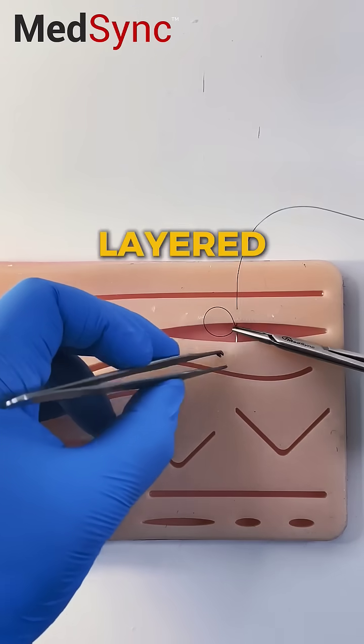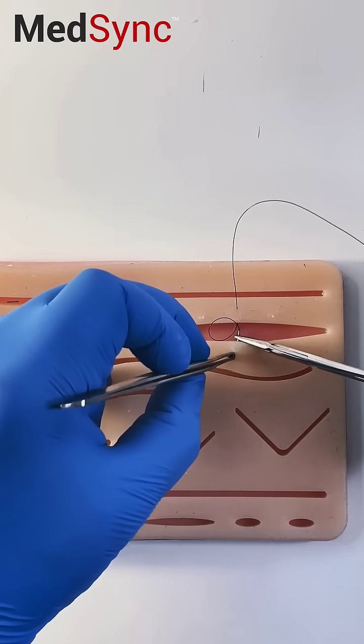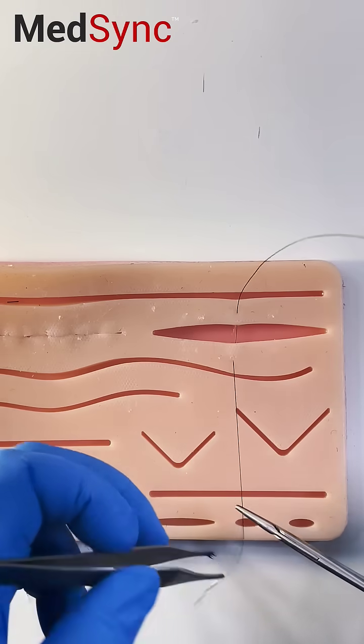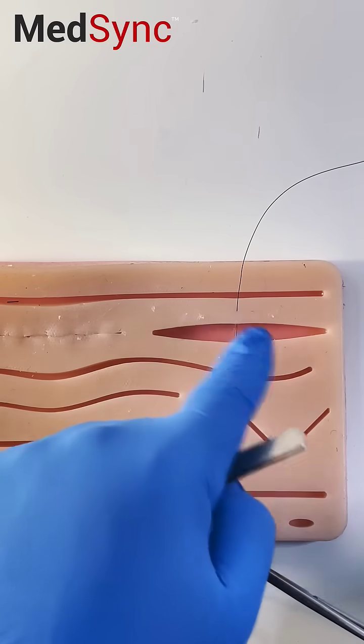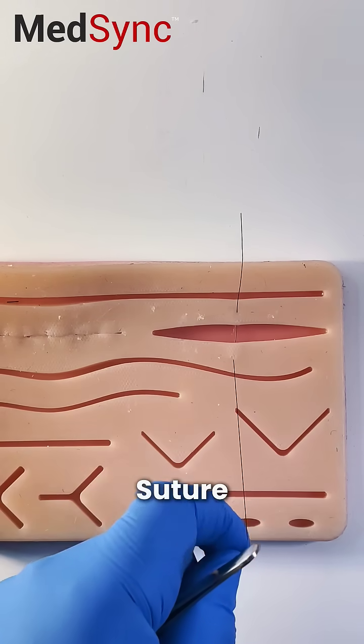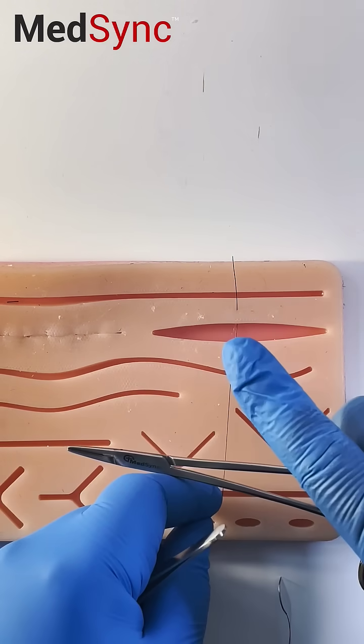You need to do a layered closure because the wound edges are far apart, but if you start with the deep dermals they'll probably just rip out. So we're going to do a tension alleviating suture, which is an interrupted suture but like a pro.